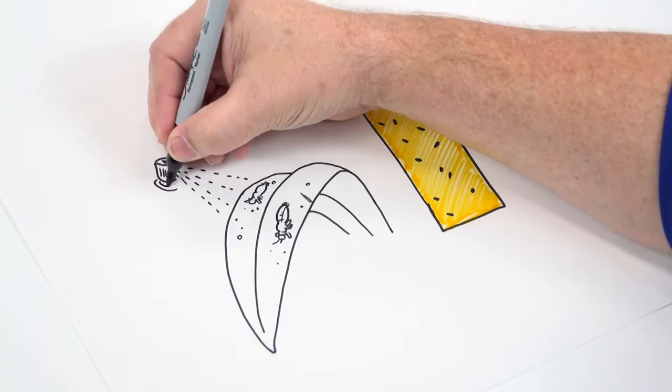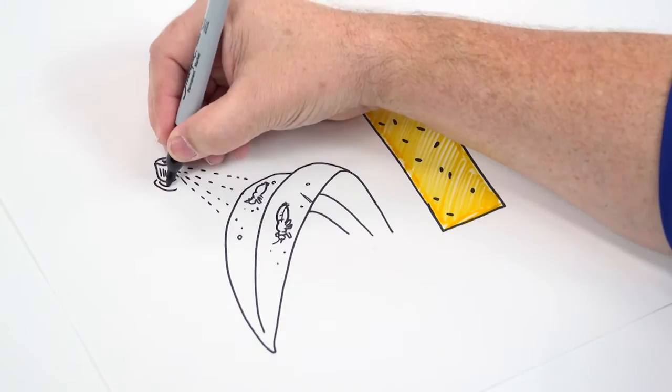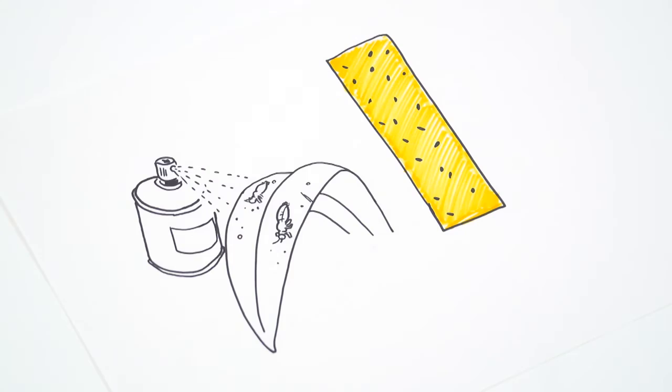Otherwise, a spray insecticide may be in order. Be certain to find the right spray that won't harm your vegetation, but will take out the thrips.